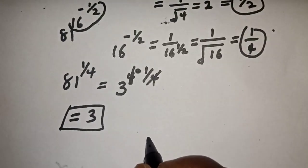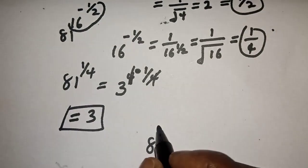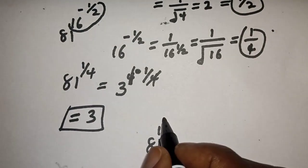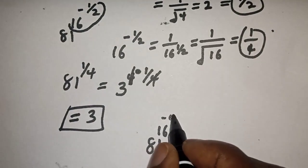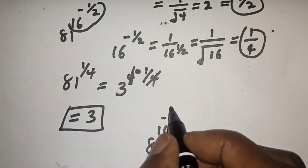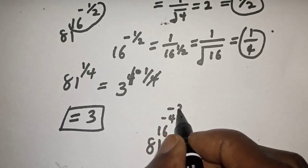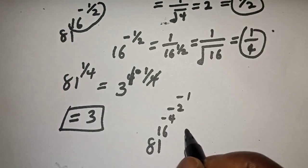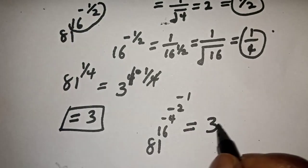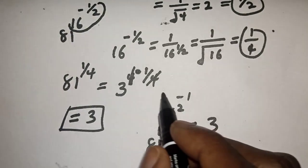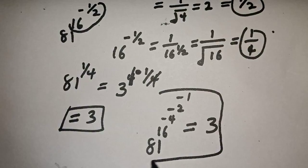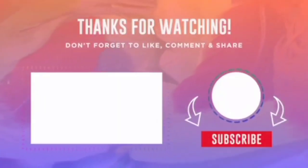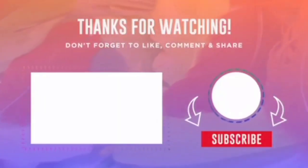Therefore, 81 raised to power 16 raised to power minus 2 raised to power minus 1 is equal to 3. If you enjoyed the class, please don't forget to like, share, comment and subscribe. Thank you.